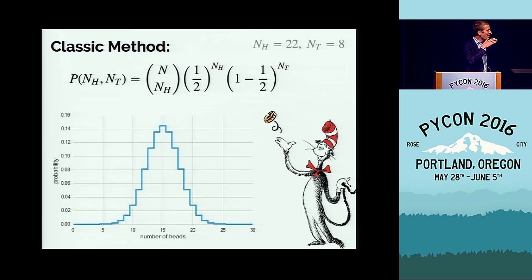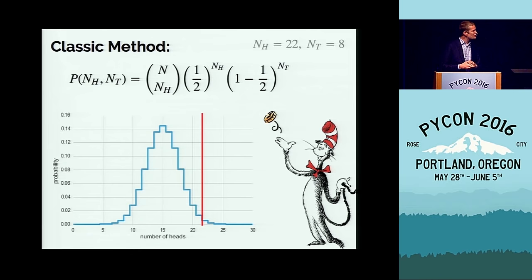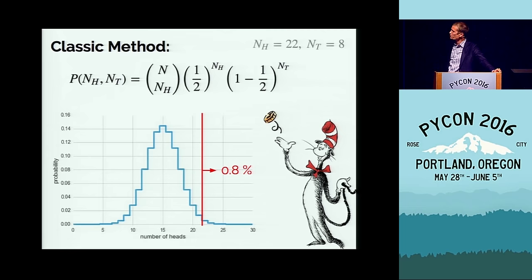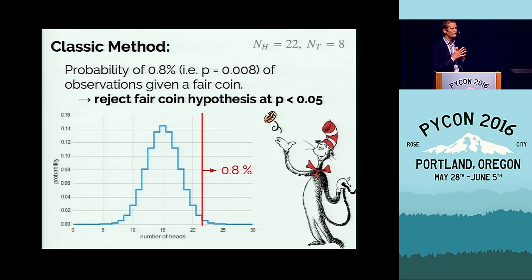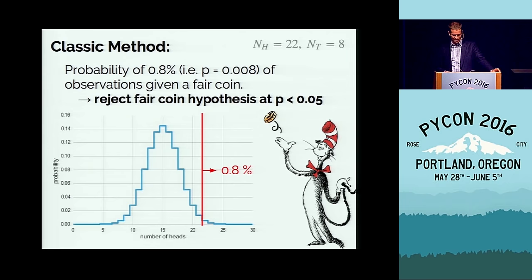If you plot the binomial distribution, you get a histogram of the number of heads in 30 tosses. We can look at where 22 hits and ask what percentage of tosses would be that big or bigger. We get a p-value of 0.008 — that is, assuming the null hypothesis is true, the probability of getting our data just by chance is 0.8%. This is less than 0.05, the arbitrary bound that was set, and therefore our coin is not fair.